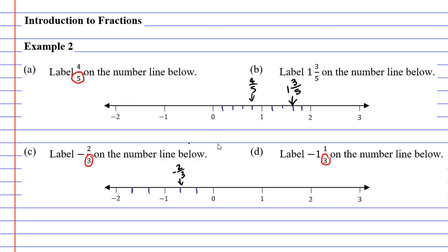Where is negative 1 and the third going to go? Well it's going to go here, negative 1 and 1 third, because this is the first line after the negative 1. Anyway that concludes our video on example 2. Remember to read the description below for links to work booklets that relate to this video.